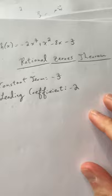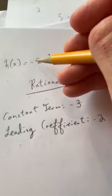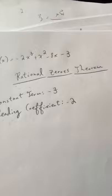Remember that every polynomial function has a leading coefficient, but not every function has a constant term. So if this just ended at negative 8x, your constant term wouldn't be negative 8 — your constant term would be 0, because you don't have anything in the function without an x in it, if you don't have that negative 3 there at the end. So just be aware of that.